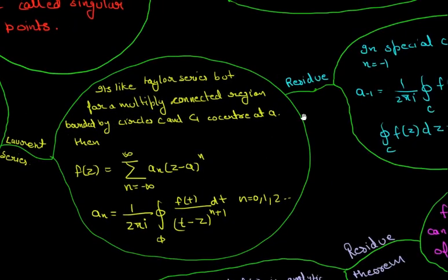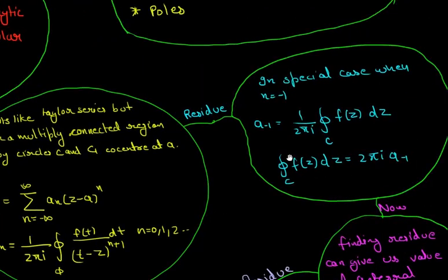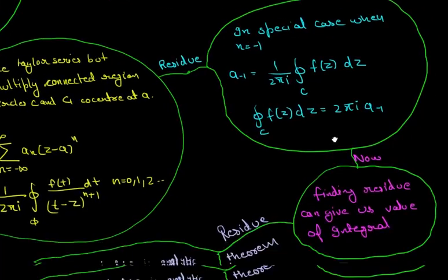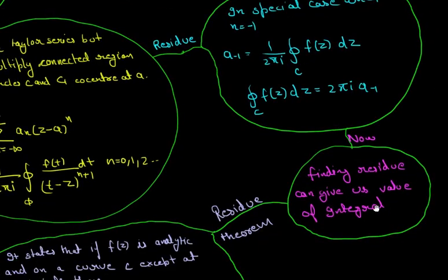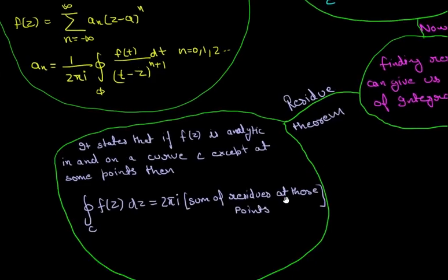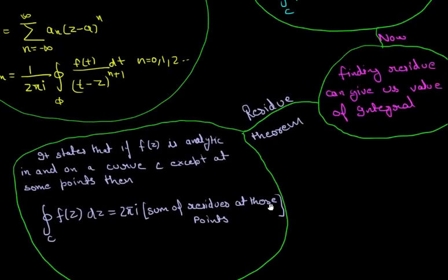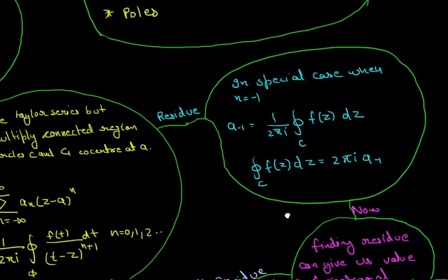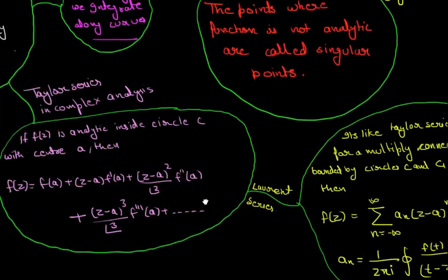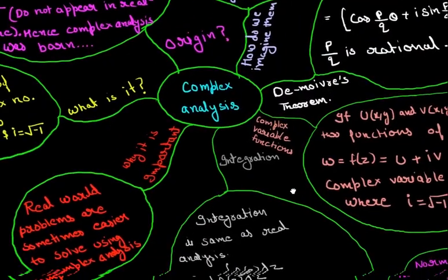This branch has the residue thing. This shows what is residue when there is n as minus one. Finding residue can give us the value of integrals which gives us the residue theorem. This branch is also finished. Now let's go back to the center.